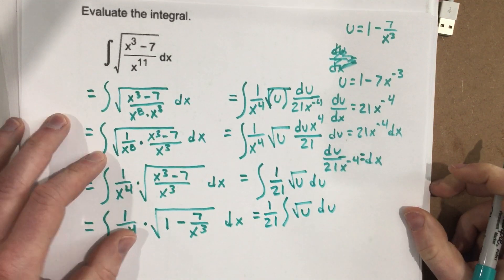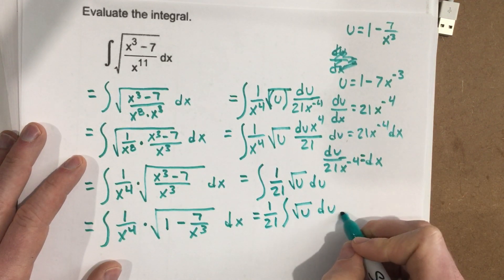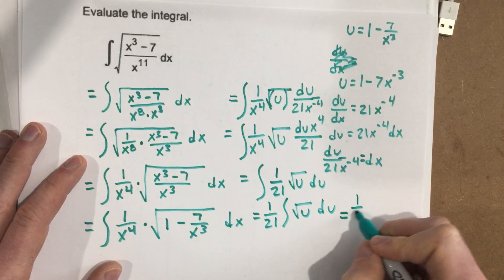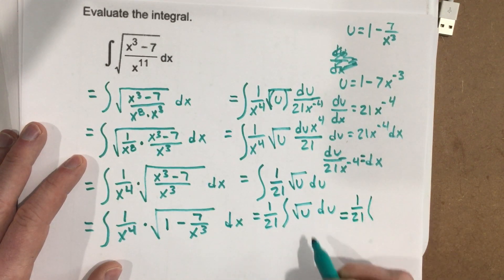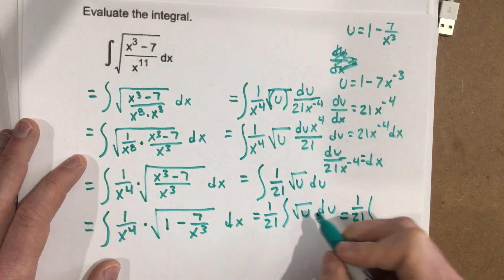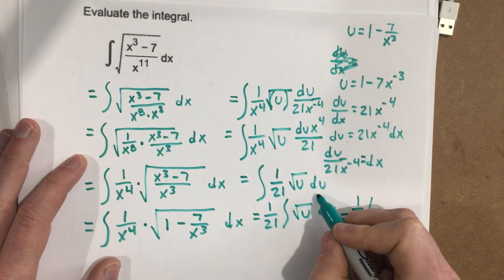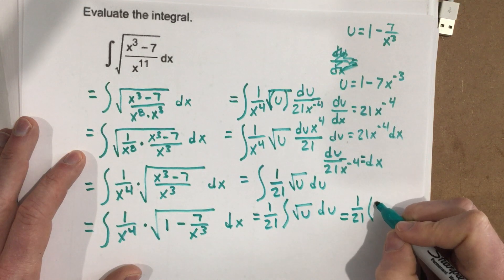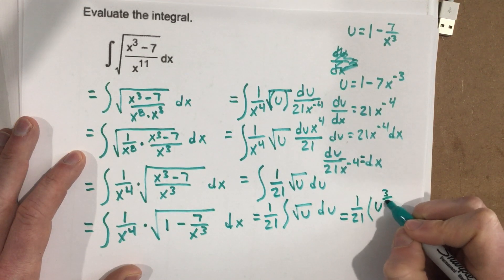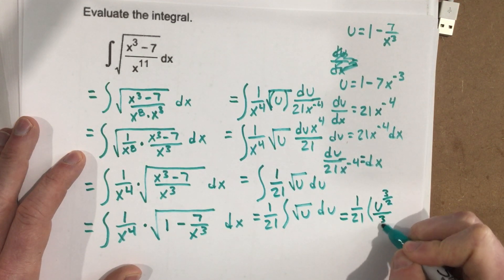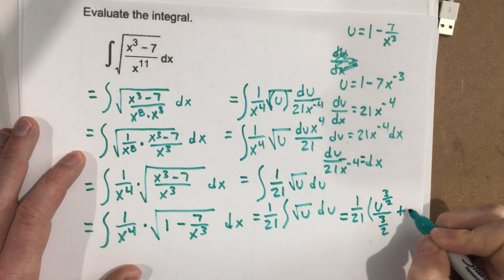And my last couple steps here, I'm going to do the integration here. That's 1 over 21. When I do the integration here, I add, this is to the half, so I'm going to add 1, that's 3 halves, divide by it. So I get u to the 3 halves divided by 3 halves plus c.